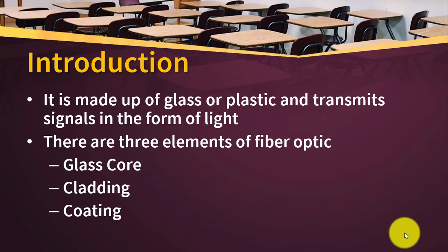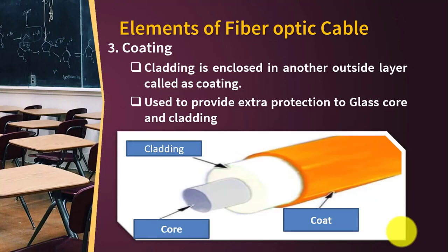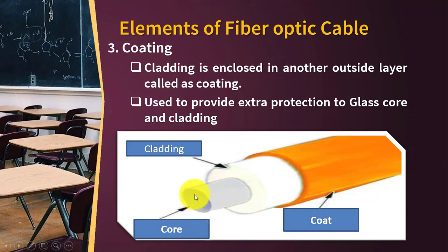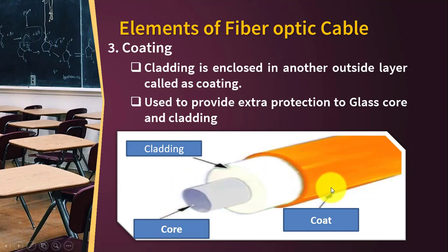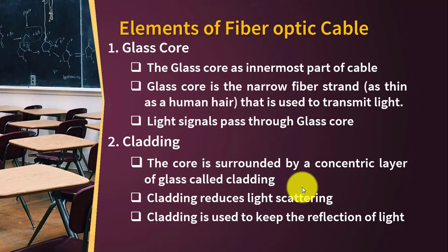There are three core elements of optical fiber: glass core, cladding, and coating. You can see here these are the three elements of the optical fiber. The first one is the core, the second is the cladding — a concentric layer — and the third one is the coating. We will discuss each of these elements in detail.